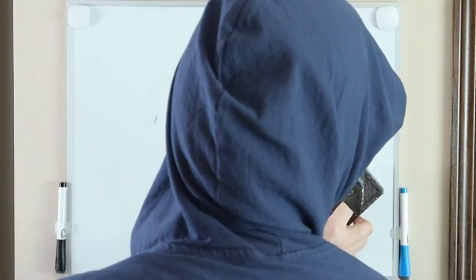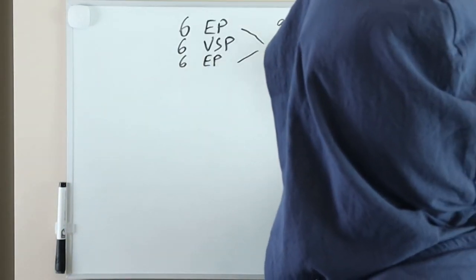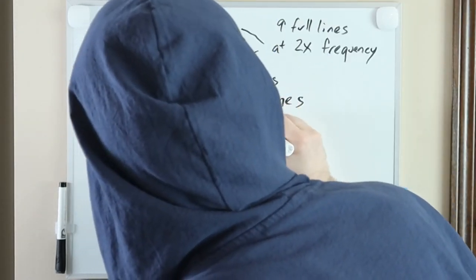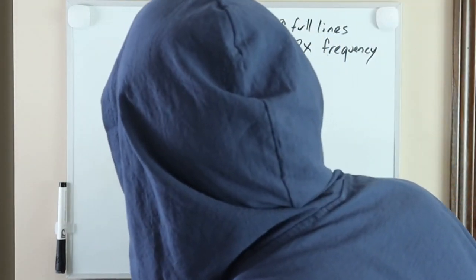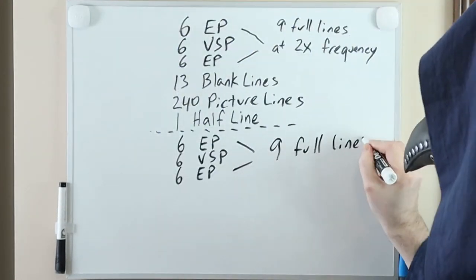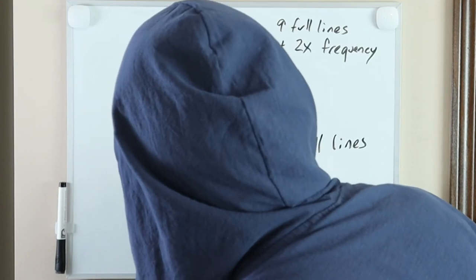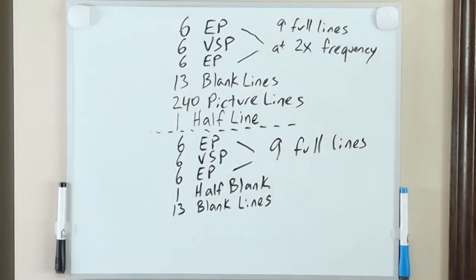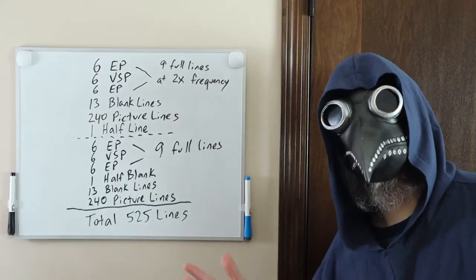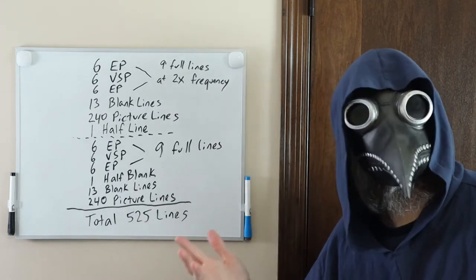So here is a summary of the sections for a single frame. We have six equalizing pulses, six vertical sync pulses, and six more equalizing pulses before the 13 blank lines. Then we have 240 lines for the picture followed by a half line. This completes the first field. The second field has six equalizing pulses, six vertical sync pulses, and six more equalizing pulses, followed by a half blank line and the 13 blank lines. Then the second field is completed with the last 240 lines for the picture. We'll show you an example of this shortly, but first let's talk about color.